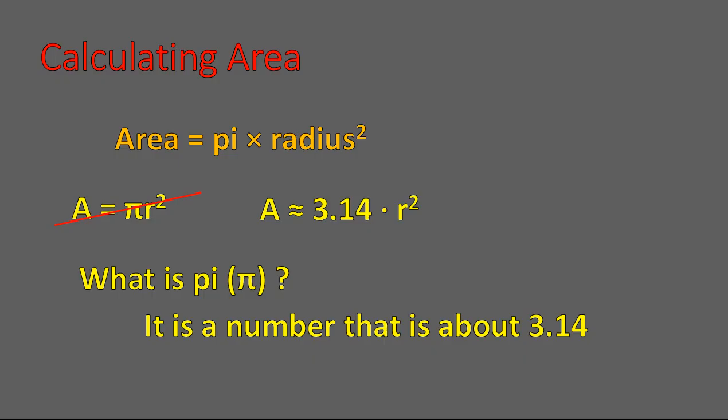To simplify our equation even more, we're just going to write radius squared as radius times radius — that way we avoid any confusion that might come from using exponents. So the equation we're going to use is: area is approximately equal to 3.14 times radius times radius.